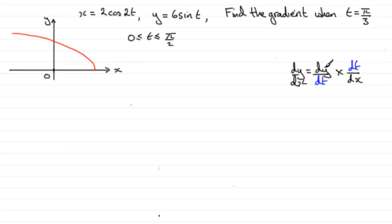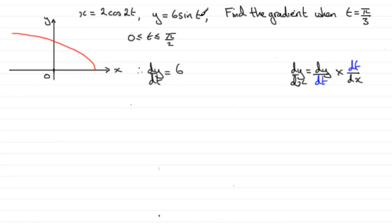First of all, we need to find dy/dt. Since y equals 6sint, therefore dy/dt is going to equal 6 times the differential of sint, which is cost.